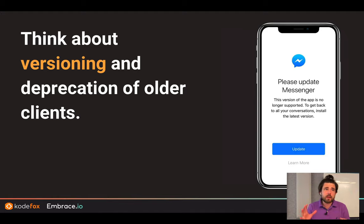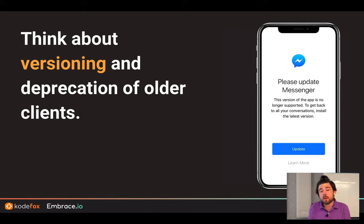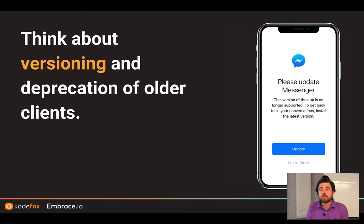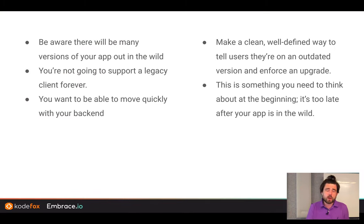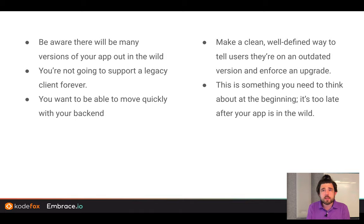Not only is your UI going to change, but your entire app is going to be evolving. When you're building production-scale stuff, you need to think about what's going to happen in two years. If you haven't updated an app in a year and a half or even six months, you'll see a screen saying this version is no longer supported. Be aware that there will be many versions out there in the wild — mobile apps are not the web where every visit gets the latest version.